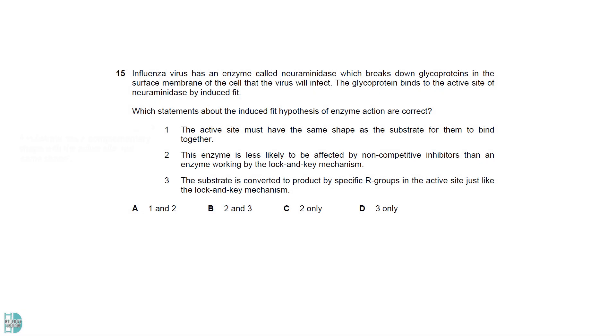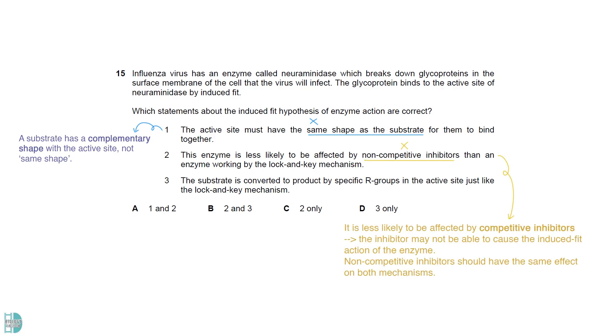A substrate has a complementary shape with the active site. They do not have the same shape. The enzyme is less likely to be affected by competitive inhibitors as the inhibitor may not be able to cause the induced fit action of the enzyme. Non-competitive inhibitors should have the same effect on both mechanisms. Both hypotheses state that the R groups at the active site interact with the substrate, forming temporary bonds for the reaction to occur.